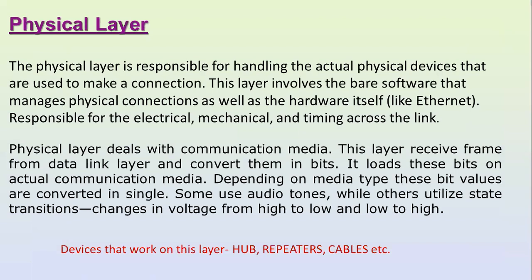The physical layer, layer one, is responsible for handling the actual physical devices used to make a connection. It involves the bare software that manages physical connections, as well as the hardware itself, like Ethernet. It is responsible for electrical, mechanical, and timing across the link. The physical layer deals with communication media, receives frames from the data link layer, and converts them into bits. These bit values are converted into signals — some use audio tones while others use state transitions such as voltage changes from high to low or low to high. The devices that work on this layer are hubs, repeaters, and cables.